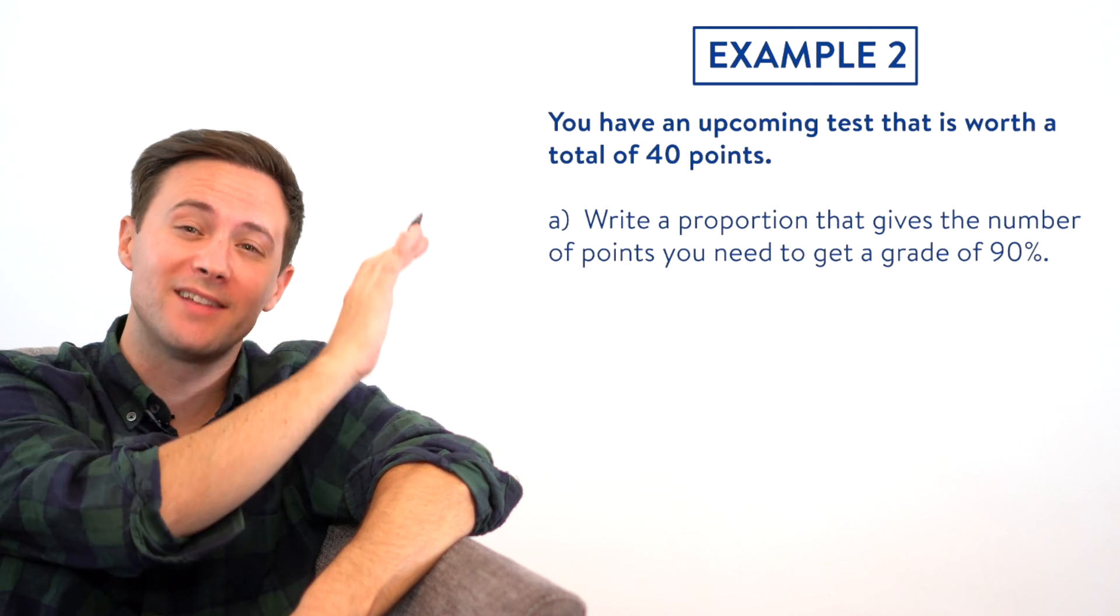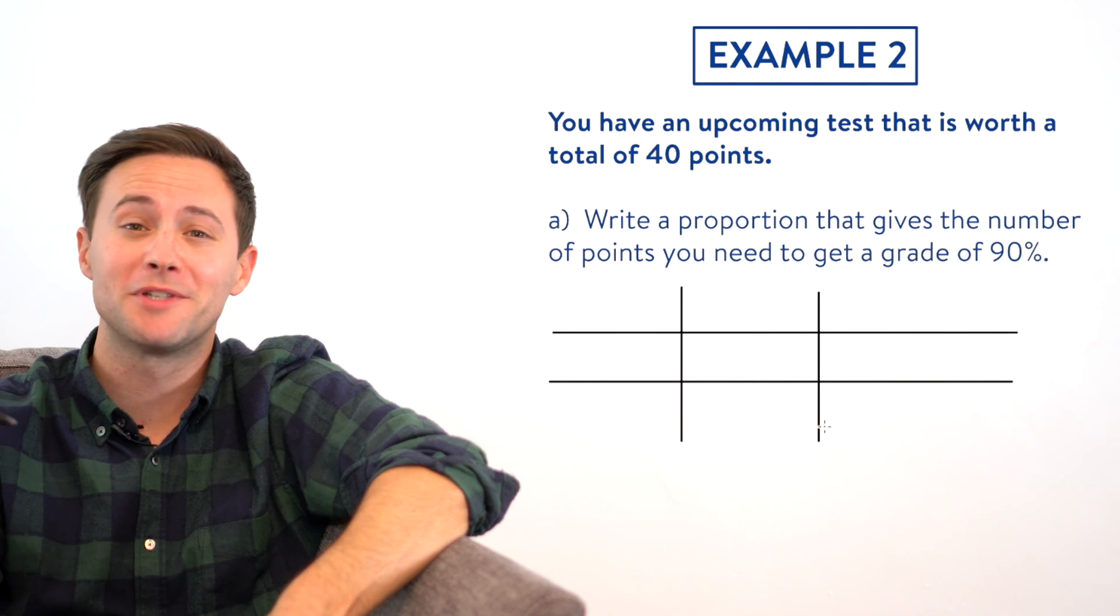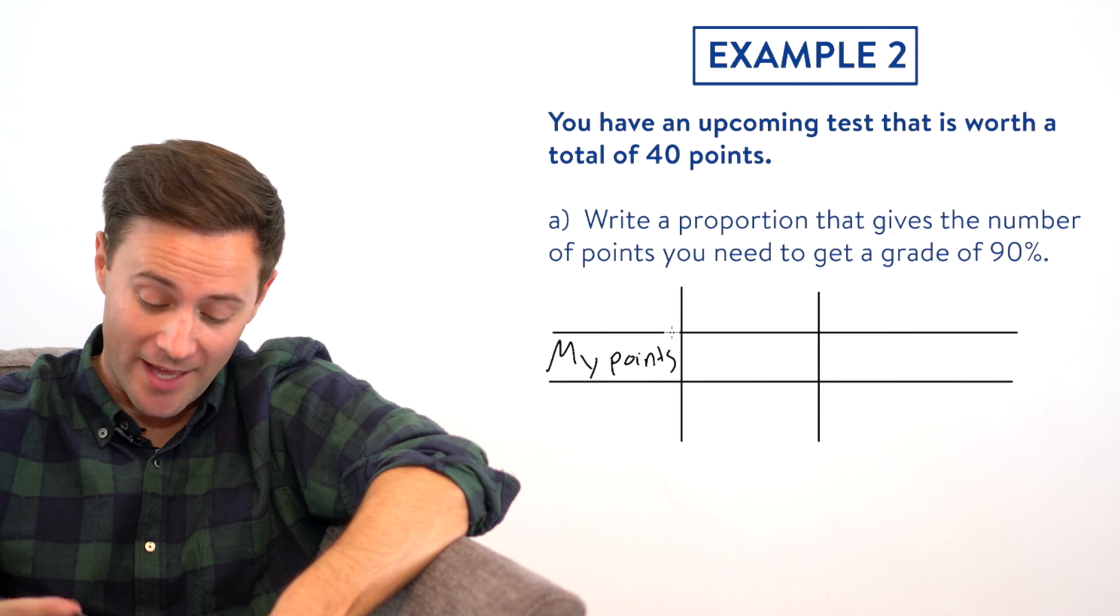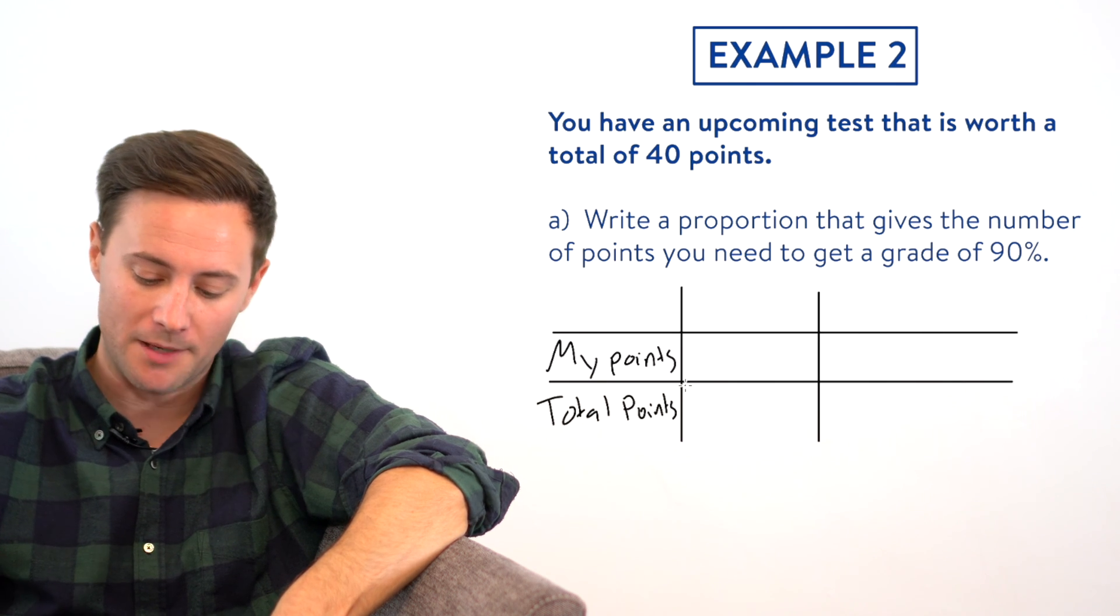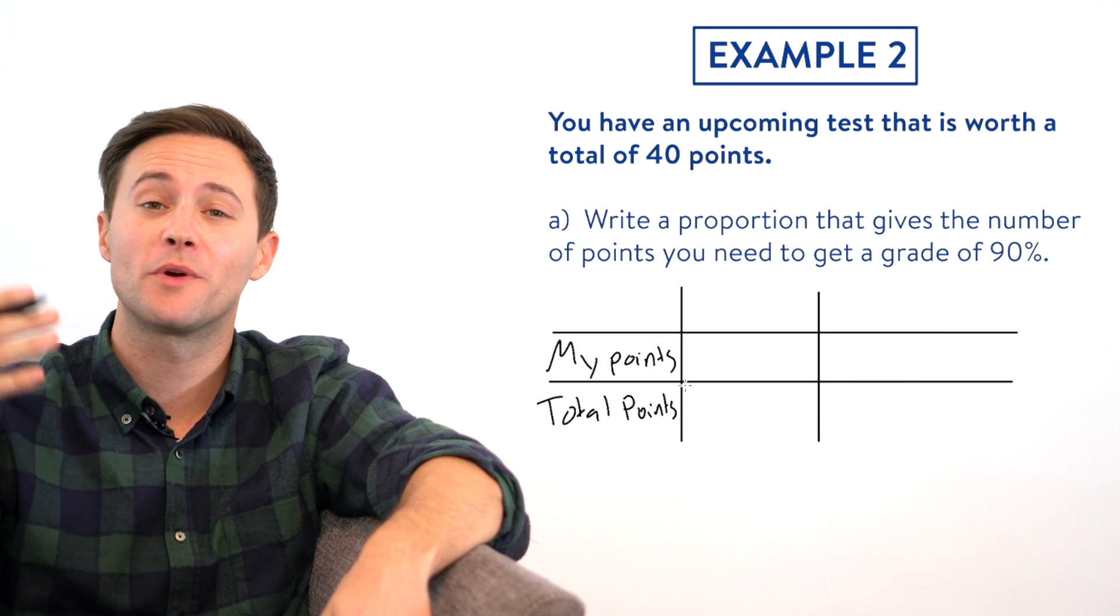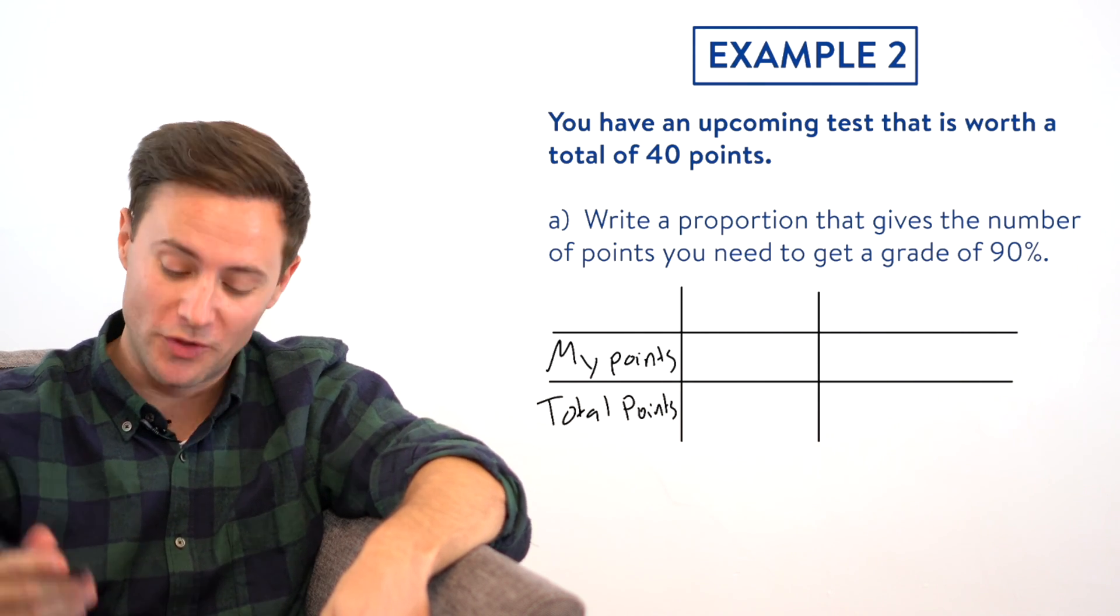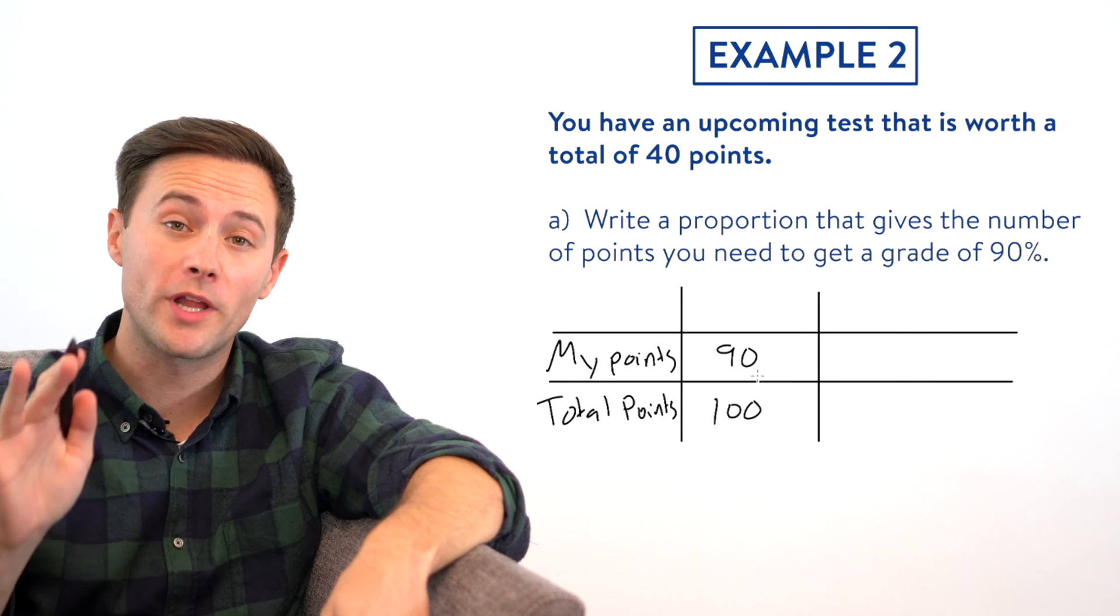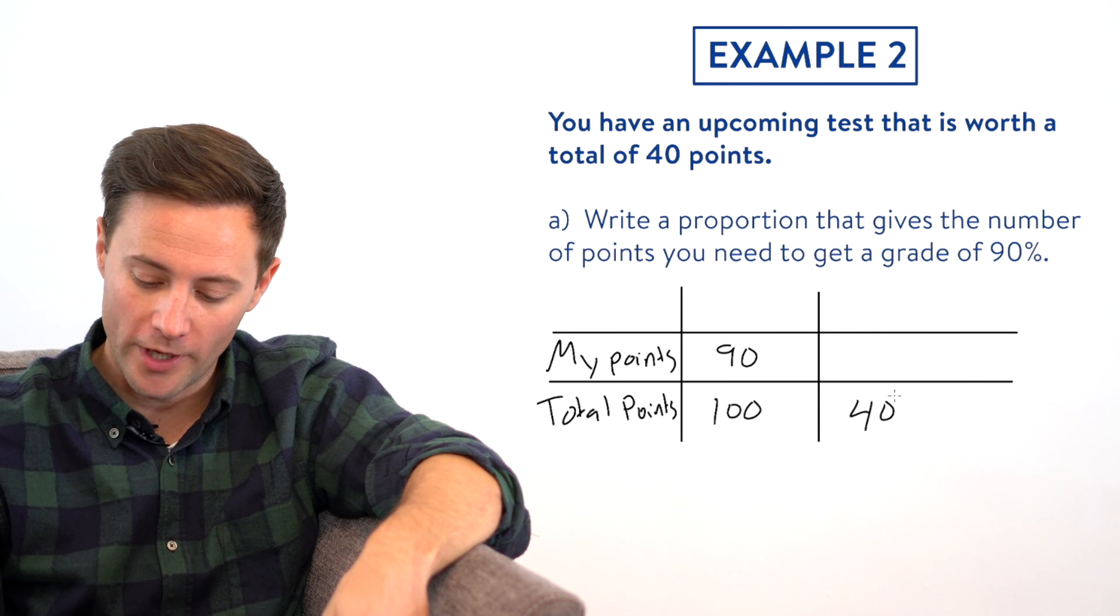Here we go. So I'm going to start the exact same way we did in example one and start with a table. If we're taking a test, there's basically two numbers you need to know. You need to know how many points you got and then total points. If you need to get a 90% on the test, remember percents are just ratios where the denominator needs to be 100%. Percent literally means per 100. So 90% would mean you scored 90 out of a total of 100 points. But this test is actually worth 40 points. So it needs to go in the total points row. So I'm going to put the 40 right there.